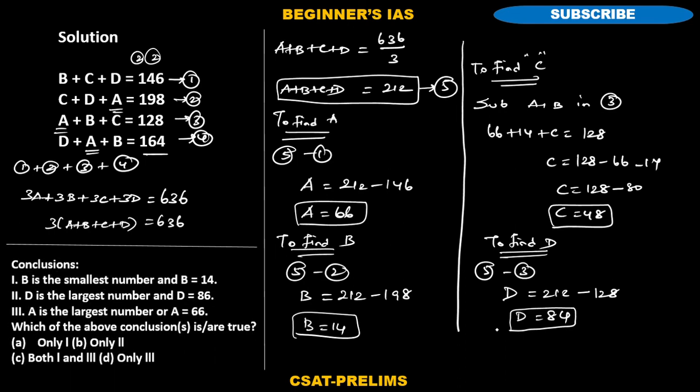After finding out the value of A, B, C, D, just check with the conclusions. Let us check with the conclusions. B is the smallest number and B is equal to 14. Check A, B, C, D - yes, among A, B, C, D, B is the smallest number. Therefore B is equal to 14. This statement is right, this conclusion is right. Now go with eliminating options. Since we can eliminate 50% of the options, listen here carefully: one should be there in the options, therefore B and D can be eliminated.